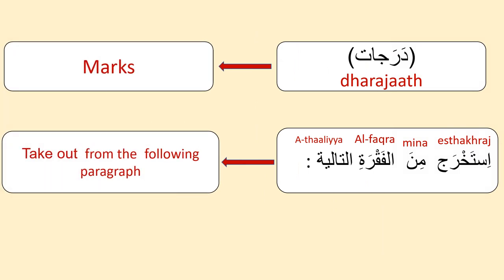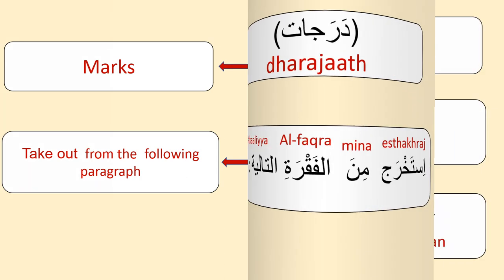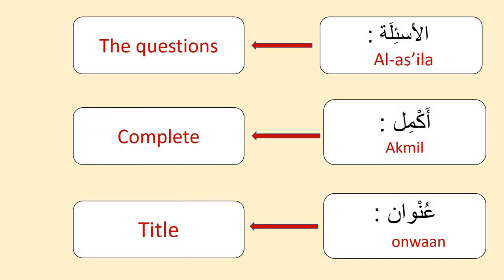'Istikhrāj minal fiqrati at-taaliya' means take out from the following paragraph — that is, take out the answers from the paragraph, as the questions will come below the paragraph. 'Akmil' means complete, for example complete the sentence. 'Unvān' means title.